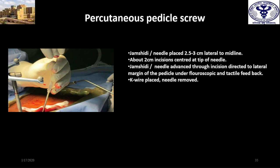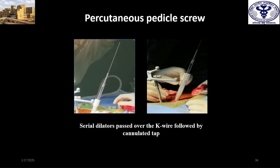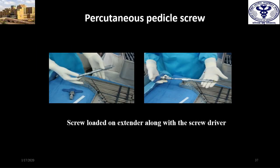After putting in your K-wire, you put in your Jamshidi needle over it if you have image guidance. Otherwise, you put the Jamshidi in first, then the K-wire, remove the Jamshidi, and put the tap over the K-wire. It is a step-by-step process: dilate, insert, and after dilatation, put on your screwdriver with the screw loaded on it and insert the screw.